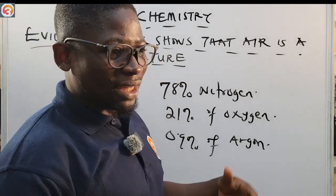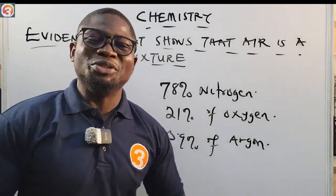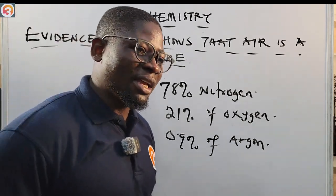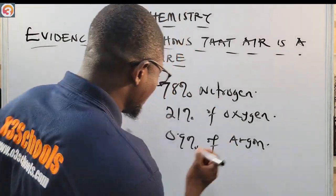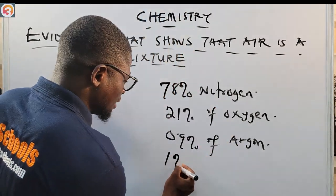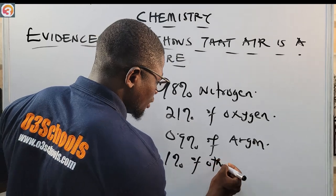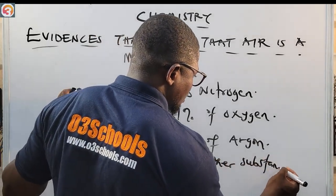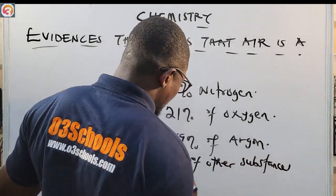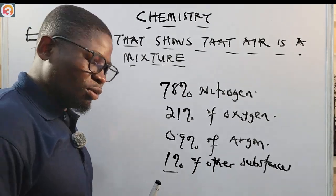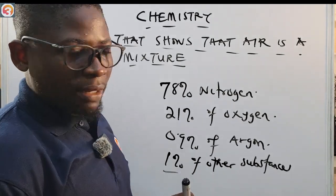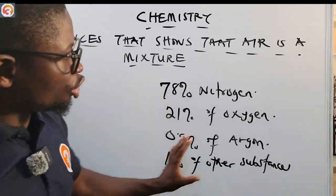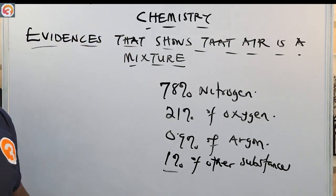We also have carbon dioxide, we have dust. That 1% of other substances may vary from place to place. But air is a homogeneous mixture of all these components.